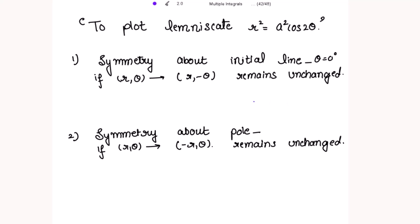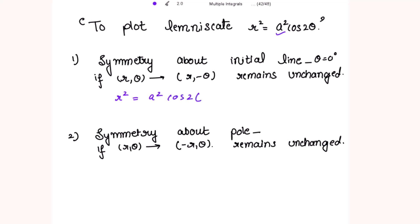Symmetry about the initial line means: if I have a curve above θ = 0°, the same area exists below the initial line. Let's verify — replacing θ with −θ gives r² = a² cos(2(−θ)) = a² cos(2θ), since cosine is an even function. The result is unchanged, so we have symmetry about the initial line.